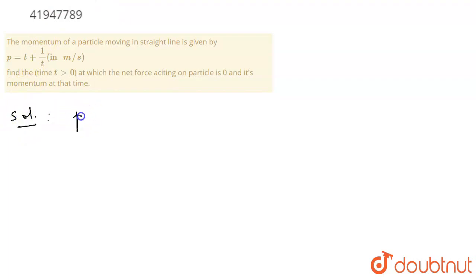We have to write the momentum. The given expression is t plus 1 by t. Then differentiate with respect to time t.